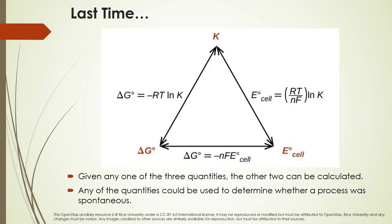Last time we talked about the relationship between the standard free energy, the equilibrium constant, and the cell potential. Notice that all of these are related — free energy relates to the equilibrium constant and also to the cell potential. So if we have one of these three quantities, we can calculate the other two. We can use any of them to determine whether a process or reaction is spontaneous.